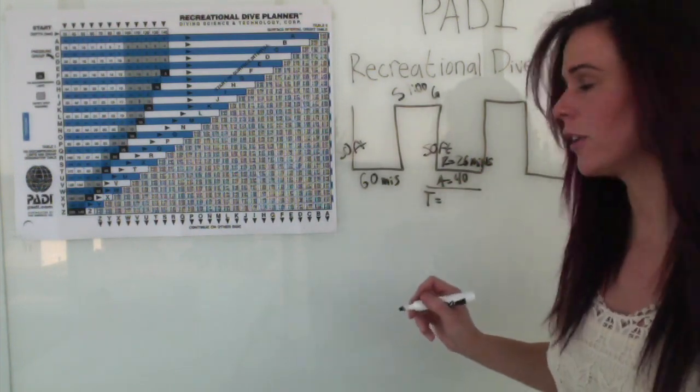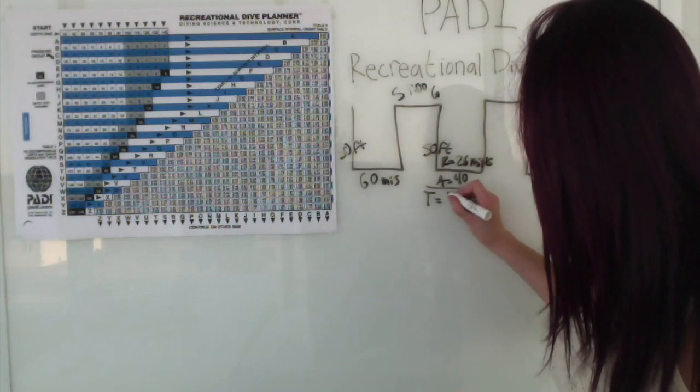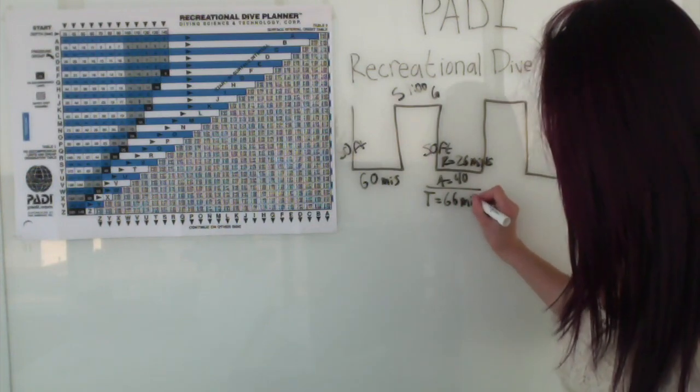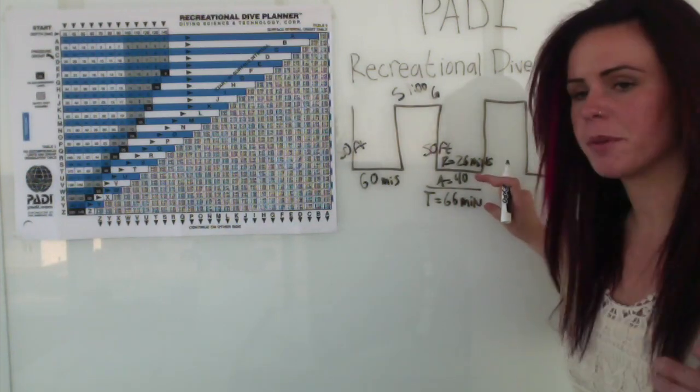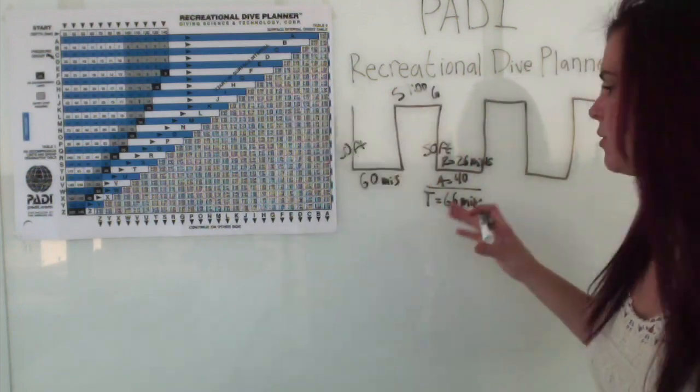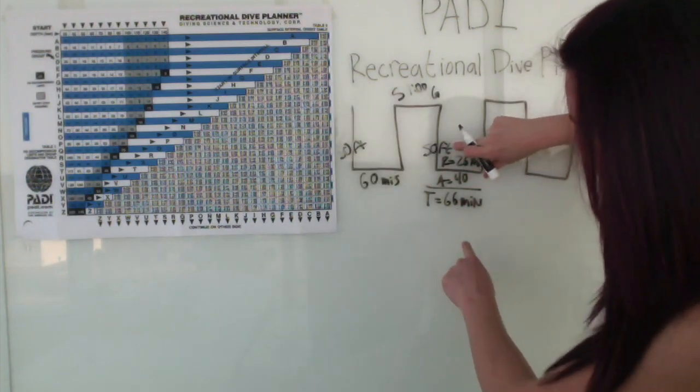So the total time that you need to account for is going to be 66 minutes residual nitrogen. Even though you're only at the bottom for 40 minutes, you have to account for the residual nitrogen.